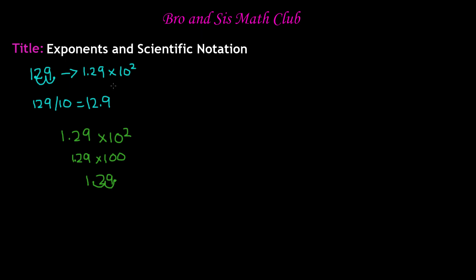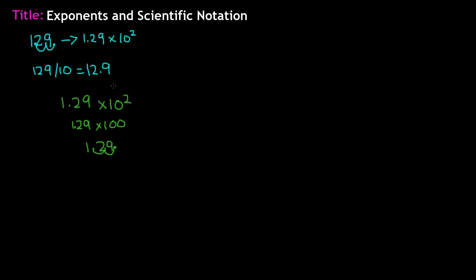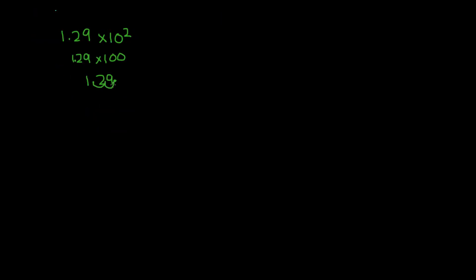Now that we have a key idea of what scientific notation is, let's use a larger number that scientists would actually use. Let's say we have a number in the millions — 438 million.